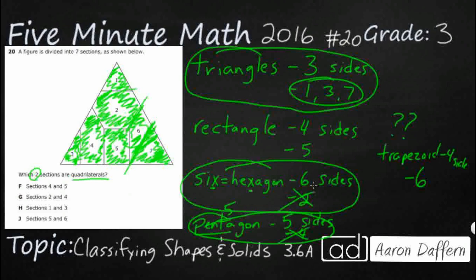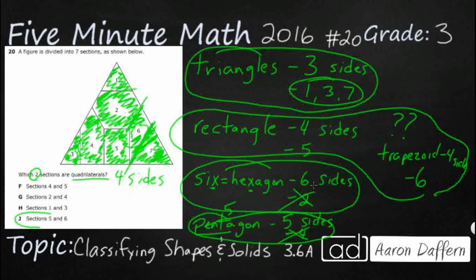Rectangle and trapezoid both have four sides and they're one section each. So guess what this means? This is what a quadrilateral means: a quadrilateral is just a big name for a four-sided shape. So that is going to be sections 5 and 6, J.